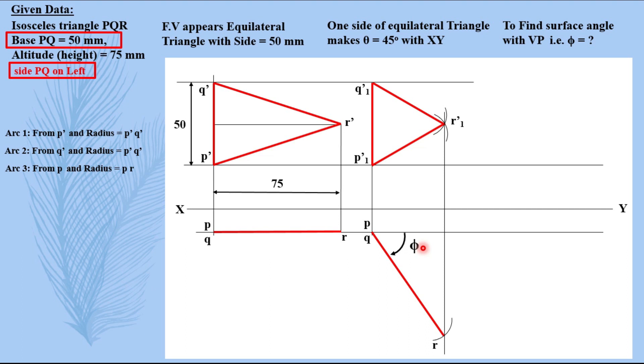Now you can find it easily. Then proceeding further, it says one of the side of equilateral triangle makes 45 degrees with xy line. Now you can take any of these three sides and keep it at 45 degrees. I am choosing this P1 dash Q1 dash. You can choose any one you want.